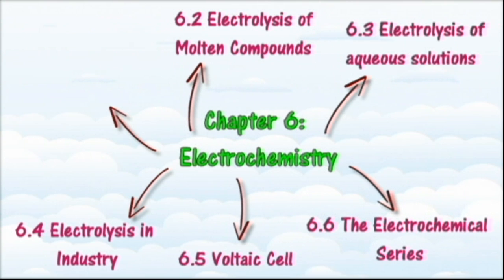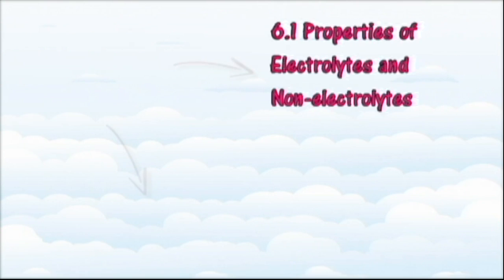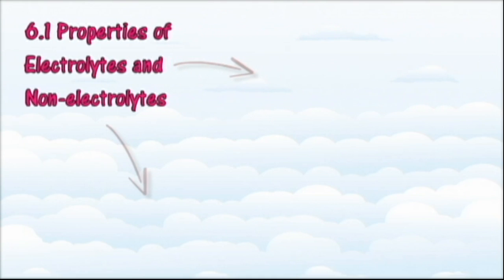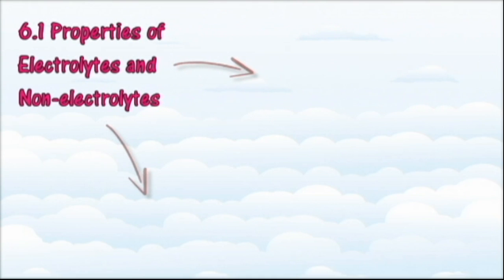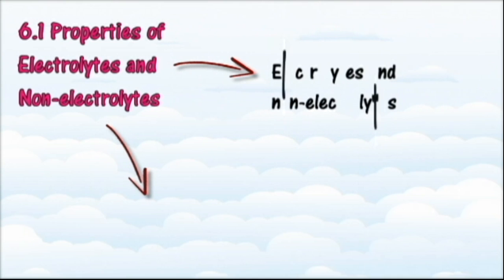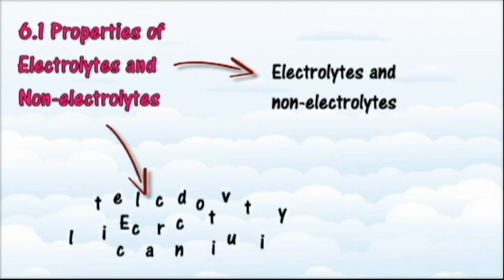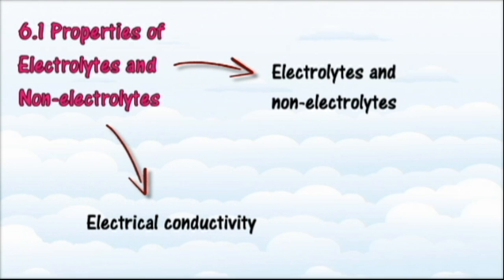In section 6.1 we will learn about the properties of electrolytes and non-electrolytes. At the end of this section you should be able to state the meaning of electrolyte, classify substances into electrolytes and non-electrolytes, and relate the presence of freely moving ions to electrical conductivity.